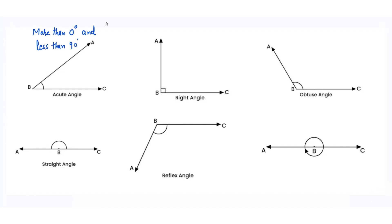For example, 0.1 degree — it's more than 0 degree, so it's an acute angle. 25 degree is an acute angle. 89.9 degree — it's less than 90 degree, so it's an acute angle.